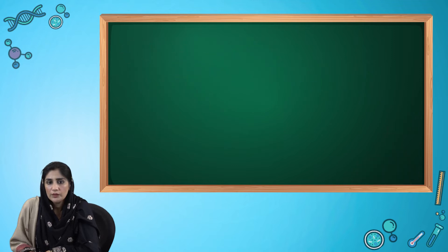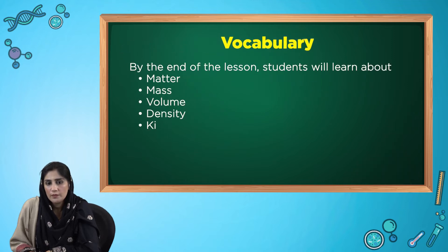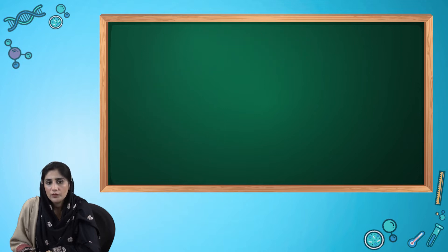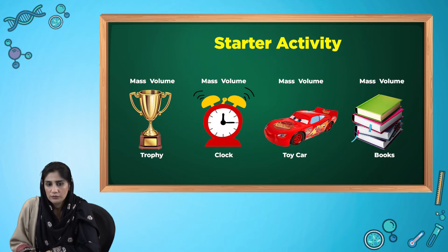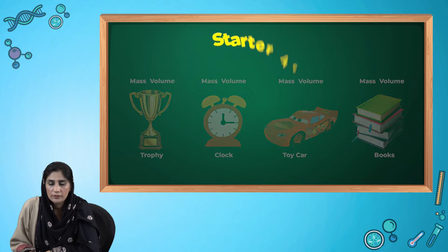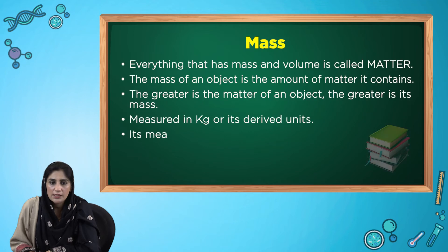You will become familiar with the displayed vocabulary list after this lesson. I would like all of you to have a look at this picture. What do you see? You can see different objects. All these objects have two things in common — they all have mass and volume. Everything that has mass and volume is matter.